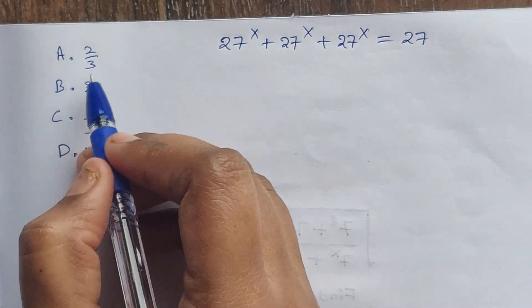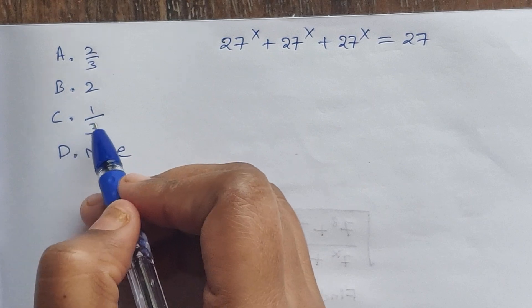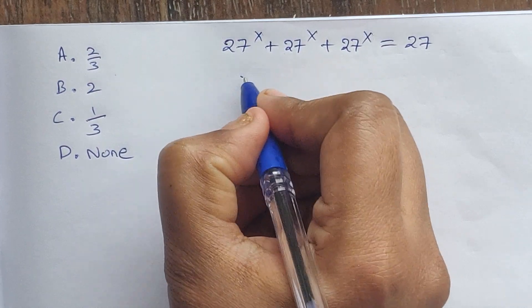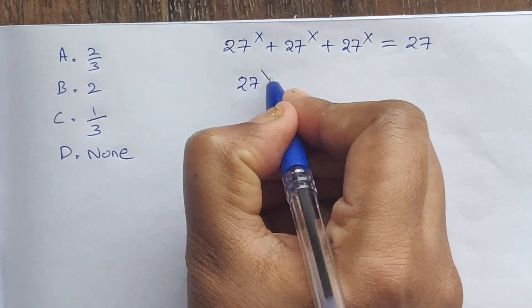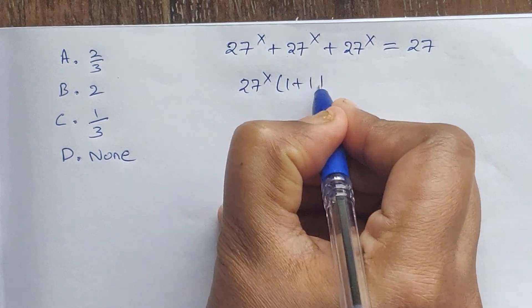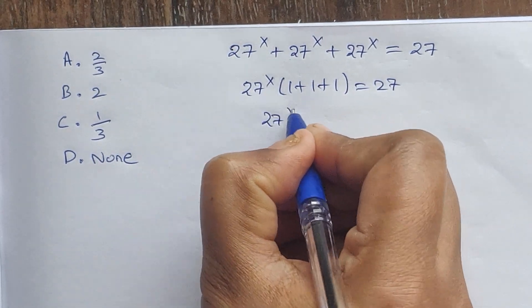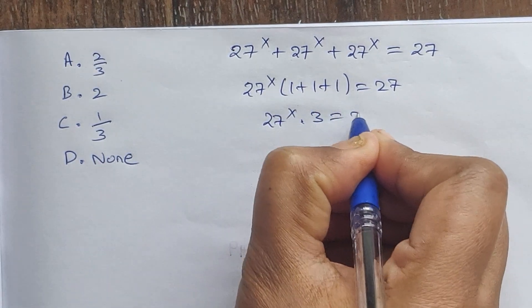Option A: 2/3. Option B: 2. Option C: 1/3. Option D: none. So let's see which option is correct. Take 27^x as common: 27^x(1 + 1 + 1) = 27. So 27^x times 3 equals 27.